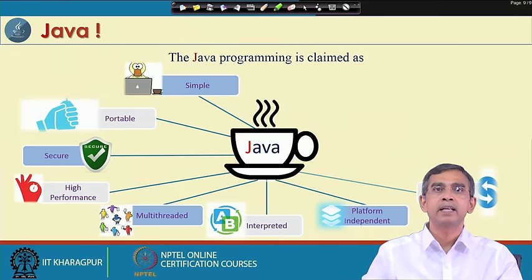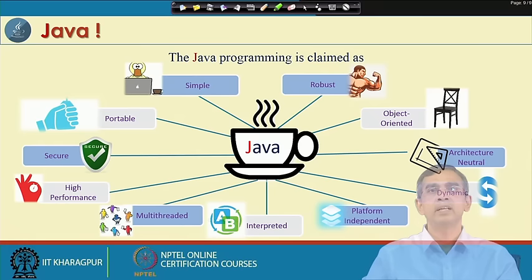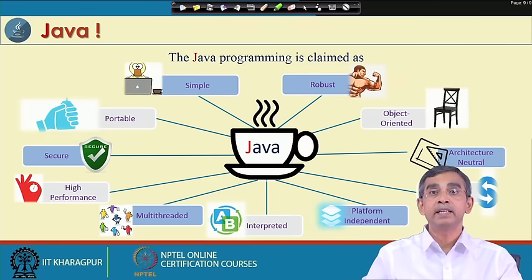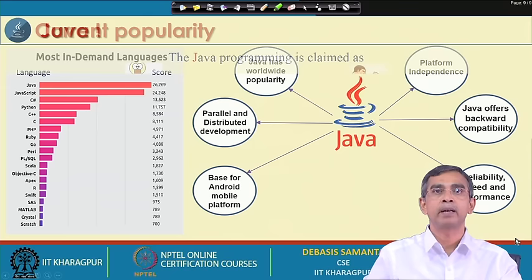The developers claim that Java programming is very simple, portable — meaning you can use it in any environment — and it is very secure, high performance, multi-threaded, interpreted, platform independent, dynamic, architecturally neutral, object oriented, and finally robust. These are the different features or specifications that Java programming has, and this is a really unique programming environment, which is why it is considered the best programming language so far.